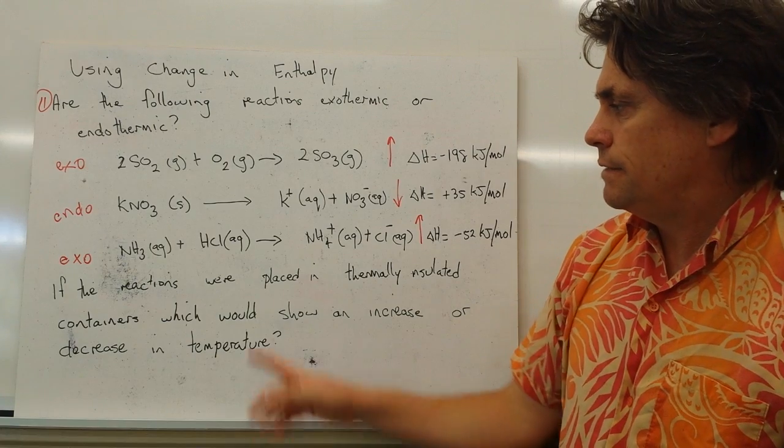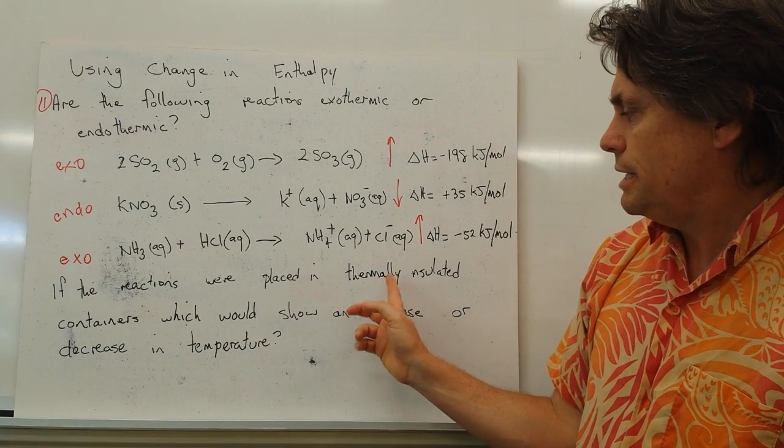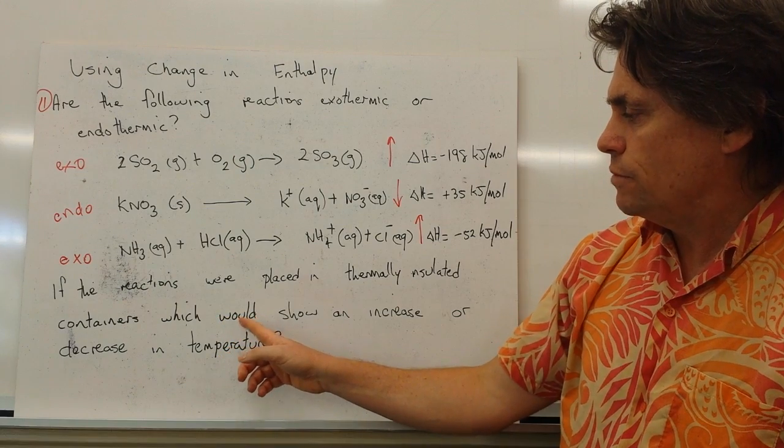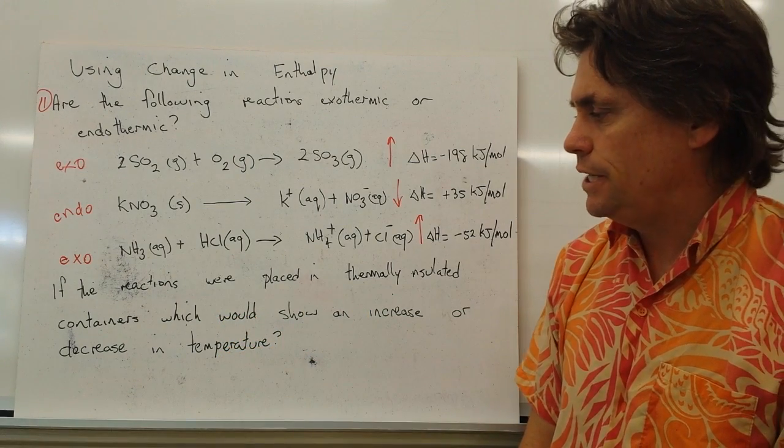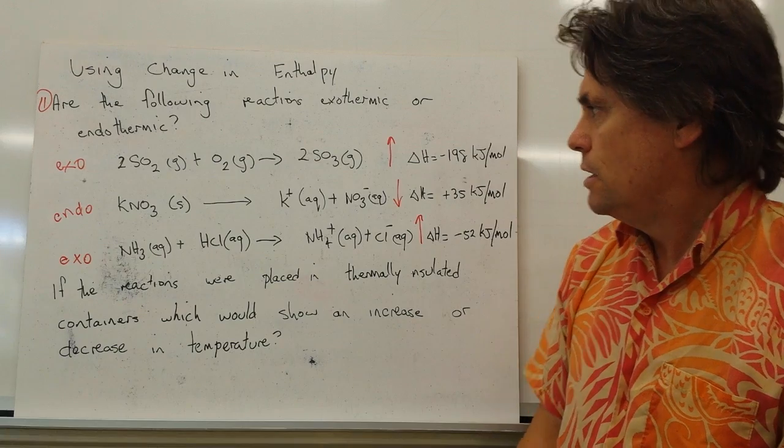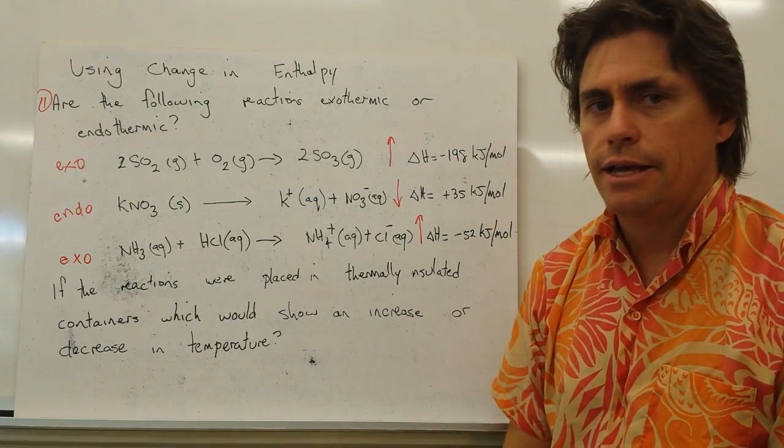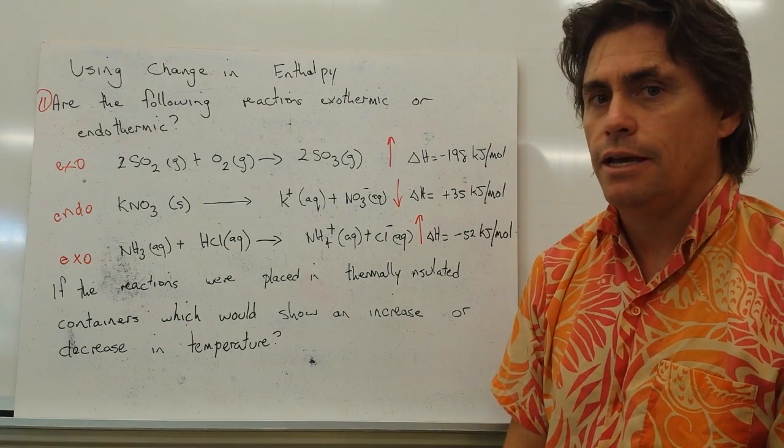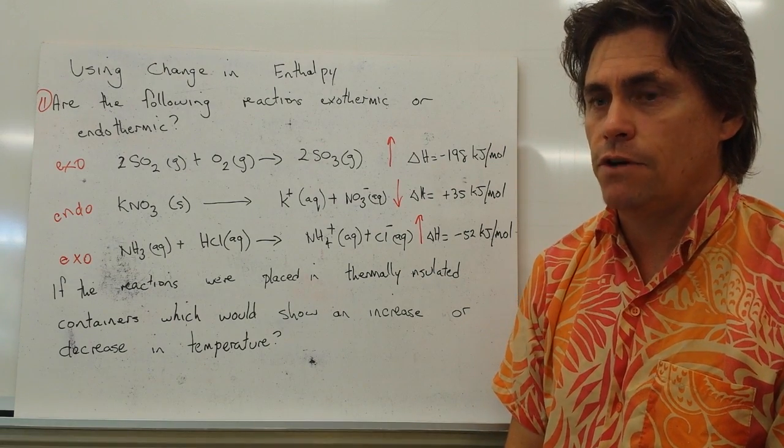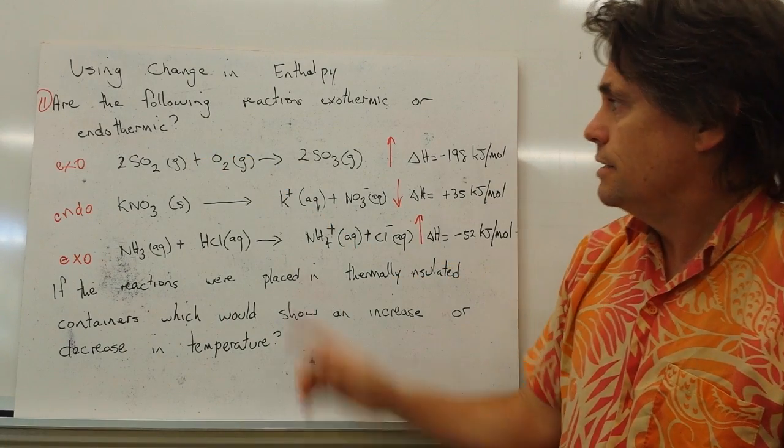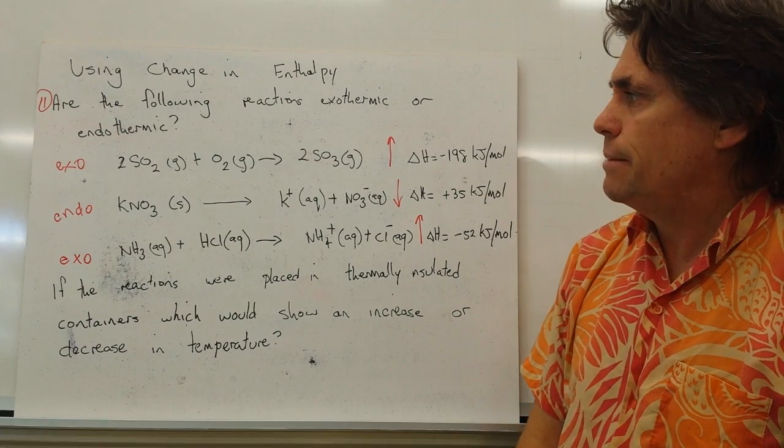Our second part to this says if the reactions were placed in a thermally insulated container, which of them would show an increase or a decrease in temperature? We know if we've got a negative value and an exothermic reaction, it's going to give heat out to the environment. In other words, the temperature of the environment that the reaction is taking place in will increase. So the first reaction will have an increase in temperature.